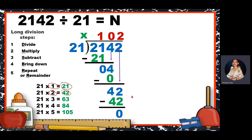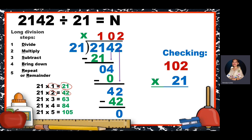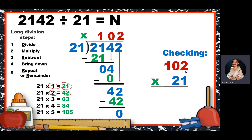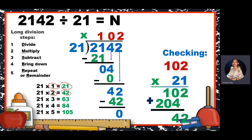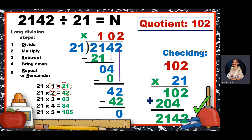To check: multiply the quotient 102 by the divisor 21. If the answer is 2,142, then our answer is correct. 1 times 2 is 2, 1 times 0 is 0, 1 times 1 is 1, so 102 times 1 is 102. For the tens digit: 2 times 2 is 4, 2 times 0 is 0, 2 times 1 is 2. Adding the partial products gives us 2,142 — correct! So the quotient is 102. Going back to our question: how many candies will be in each bag? The answer is 102 candies in one pack.